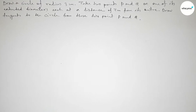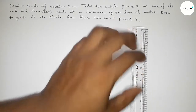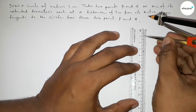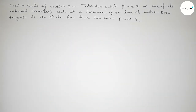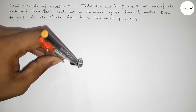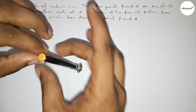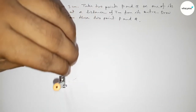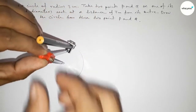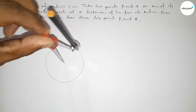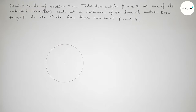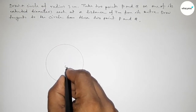Let's start the video now. First of all we have to draw a circle of radius 3 centimeters. Taking 3 centimeters using the scale, putting the compass here, and now drawing a circle of radius 3 centimeters.